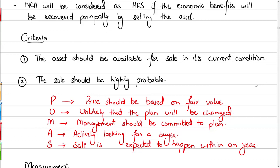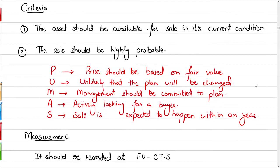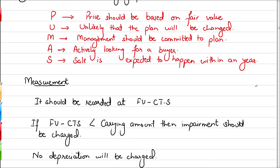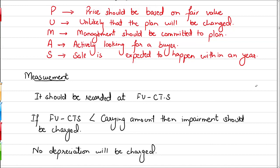Once a non-current asset is classified as held for sale, it should be recorded at the lower of its carrying amount and fair value minus costs to sell. If fair value minus costs to sell is less than the carrying amount, there will be an impairment, which is recorded in profit and loss. Since the asset will no longer be used by the company and will be sold, no further depreciation is charged on non-current assets held for sale.